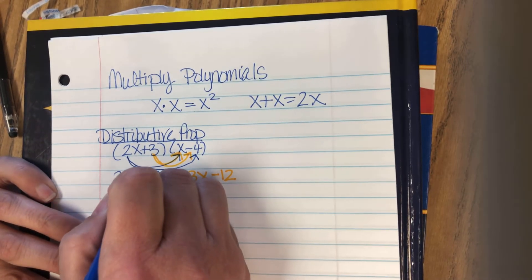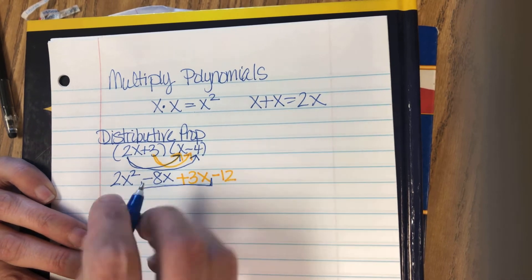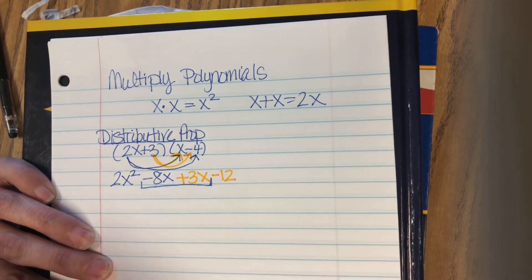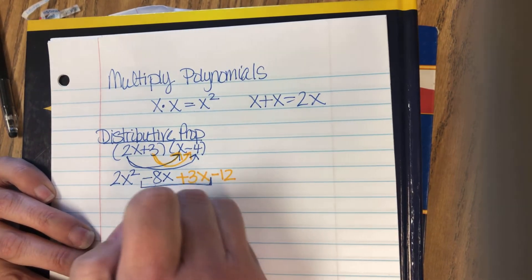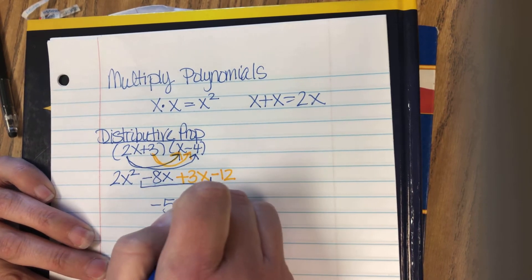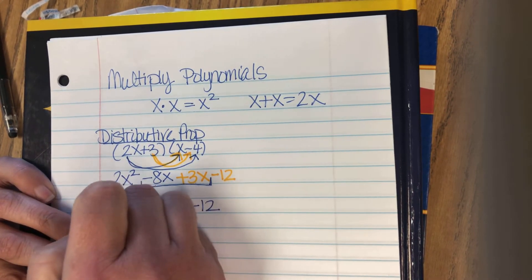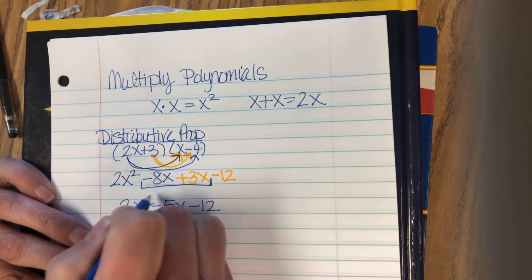Then we have to look for like terms, and our like terms are right there in the middle, negative 8x plus 3x. Negative 8x plus 3x is negative 5x. Bring down the negative 12, bring down the 2x squared, and that's your answer.